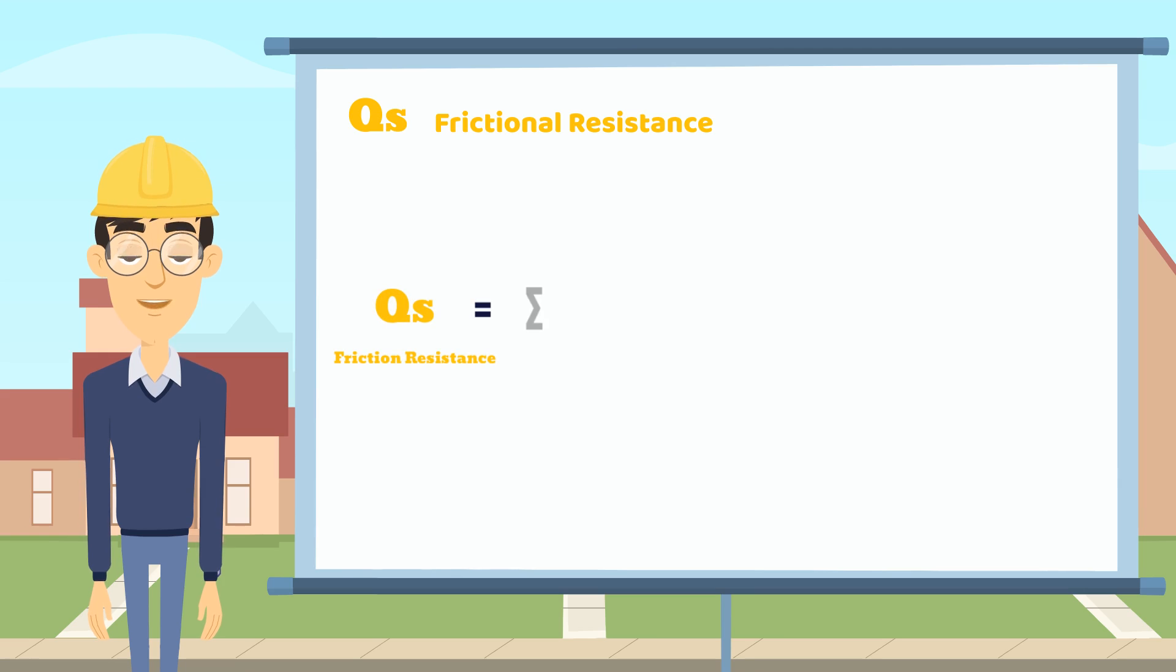As we can see, it is calculated by the summation of the perimeter of pile times the pile lengths with different unit frictional resistance.